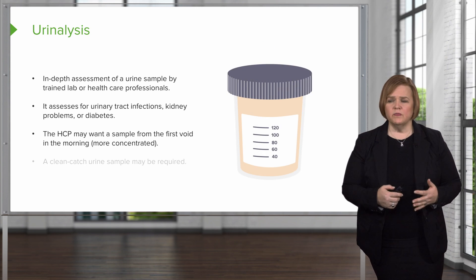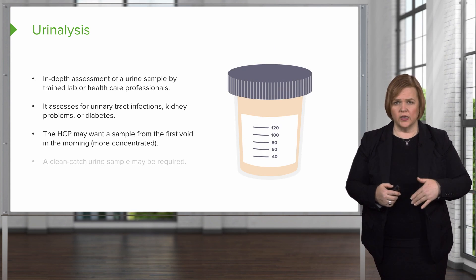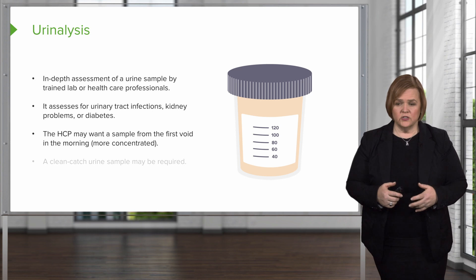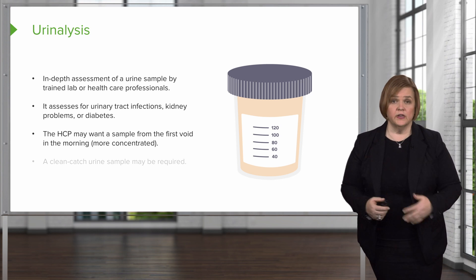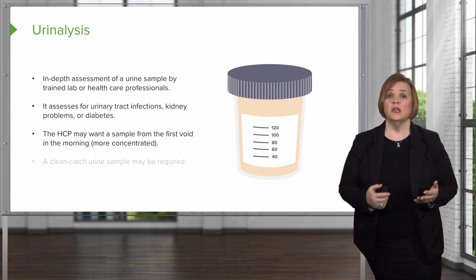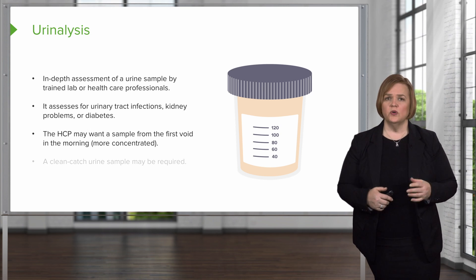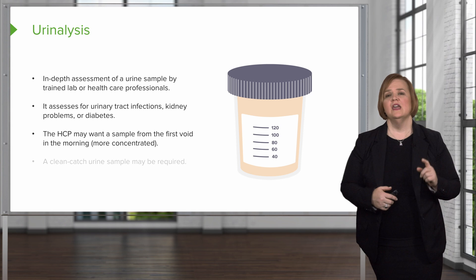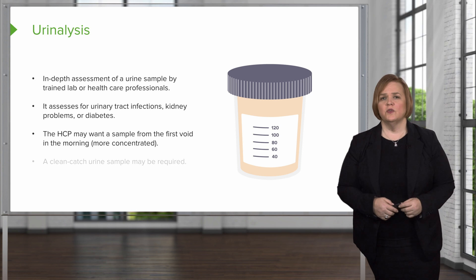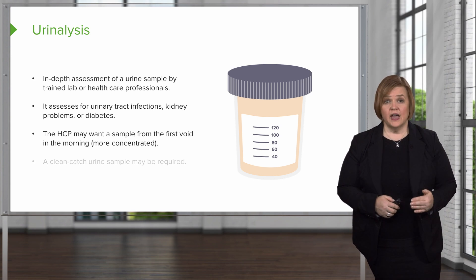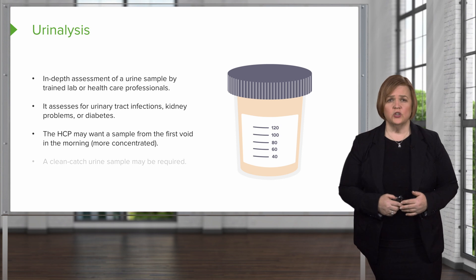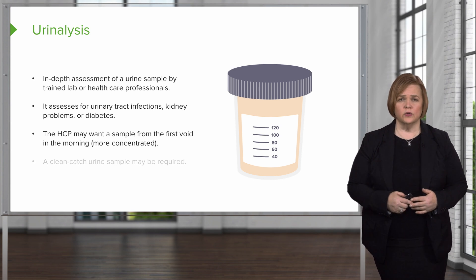Now the healthcare provider may want a sample of first void. That means you're going to ask the patient to do the urine sample at home if they're an outpatient, or in the hospital, but it needs to be the first void — when they get up in the morning, the first time they pee. That's what we're looking for because it's more concentrated. If that's what the healthcare provider wants, they'll usually include that in the order.